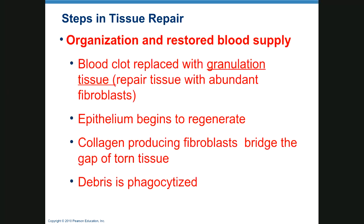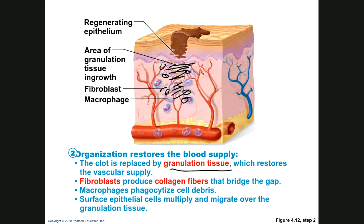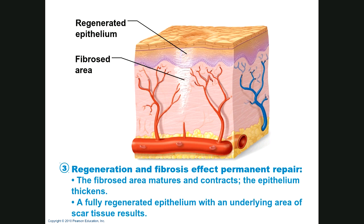When tissue is being repaired, if blood vessels are broken, a clot forms. Collagen fibers are made to bring the broken parts together. Many cells come into the area to repair the tissue, creating granulation tissue — under the microscope it looks like little granules. Many of these cells are fibroblasts, which are connective tissue cells that make collagen fibers to bridge the broken areas.